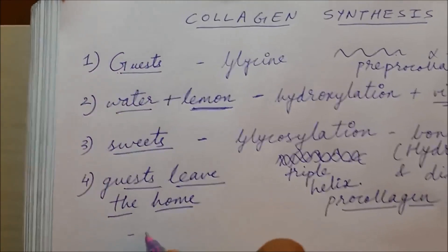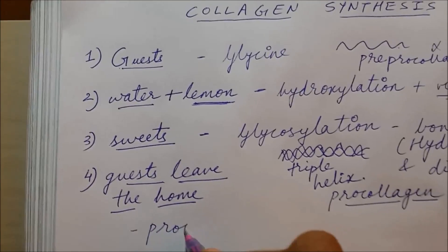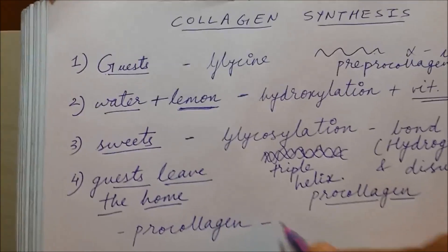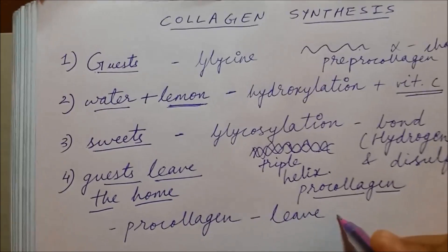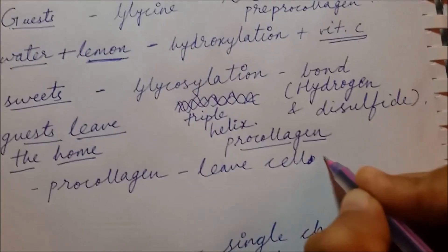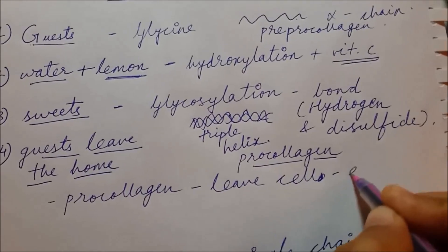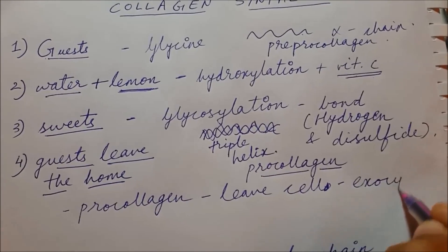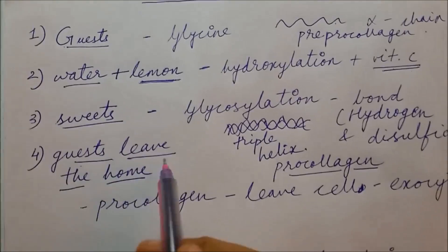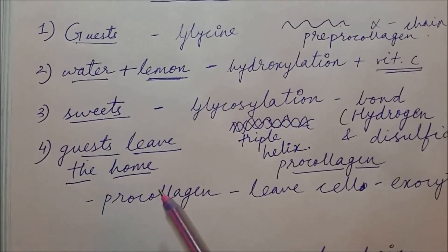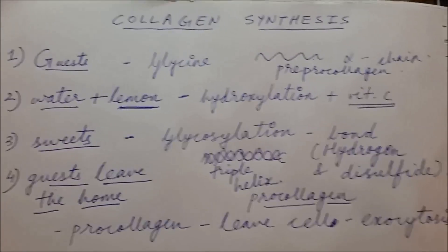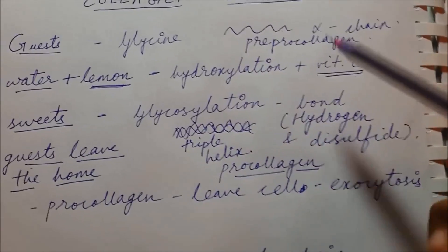The fourth step: the guest leaves the home. This means the procollagen will leave the cell — that is exocytosis. So guest leaving the home = exocytosis.